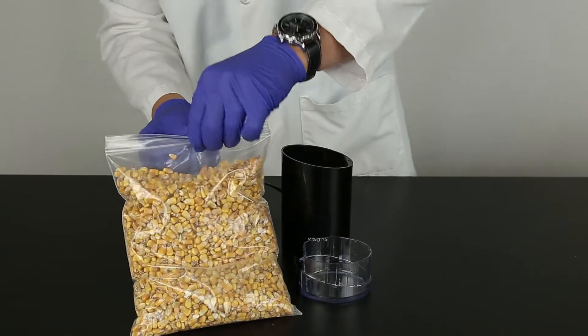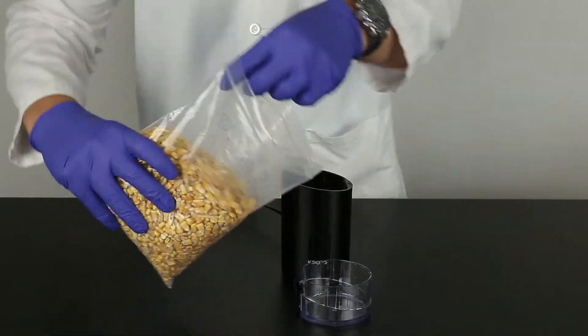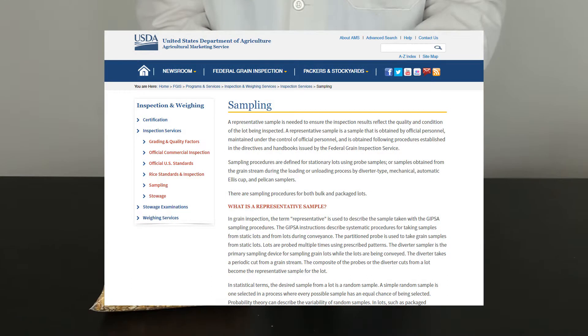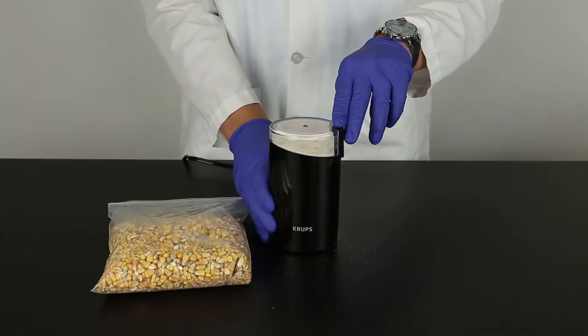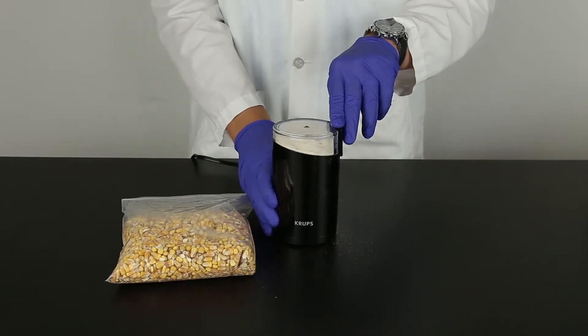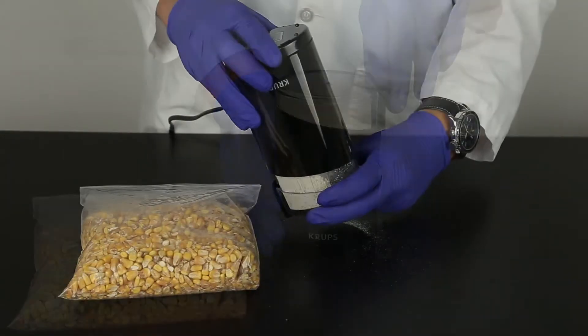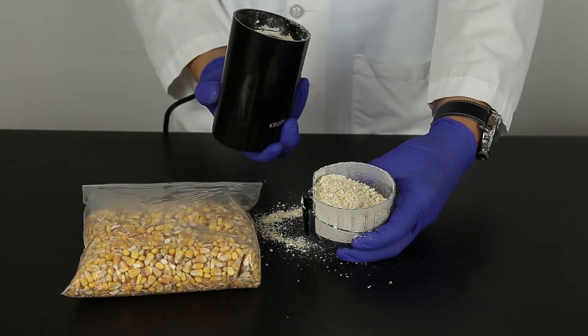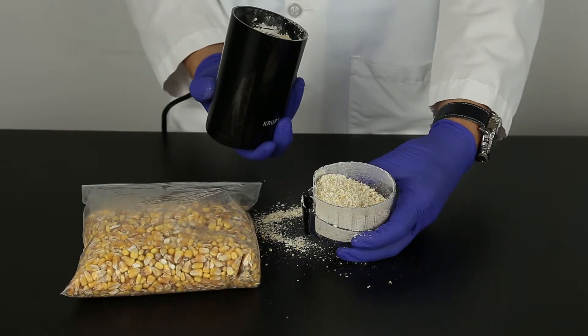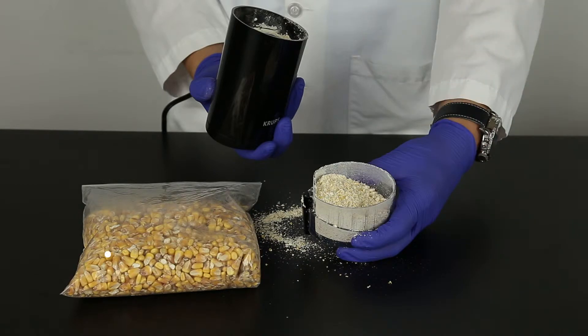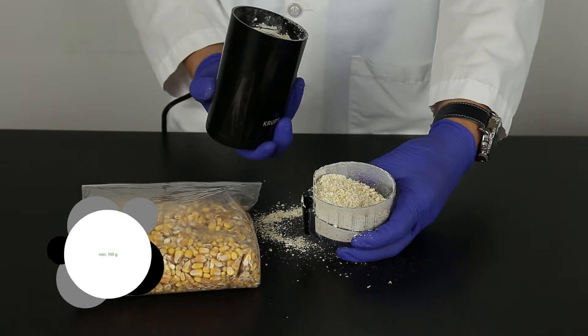The sample to be tested should be collected according to accepted sampling techniques. See the FGIS sampling protocol or contact your Neogen representative. Obtain a representative sample and grind so that at least 95% of the ground material passes through a 20 mesh sieve. The particle size should be about the same as espresso. It is best to grind a minimum of 100 grams of your sample.